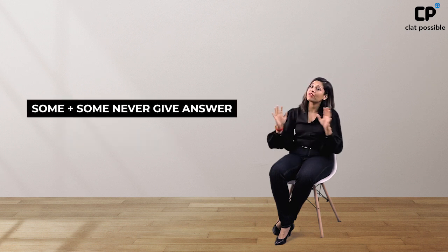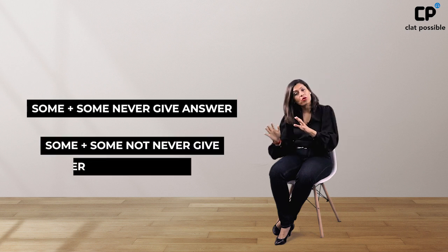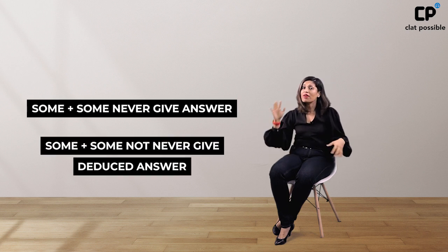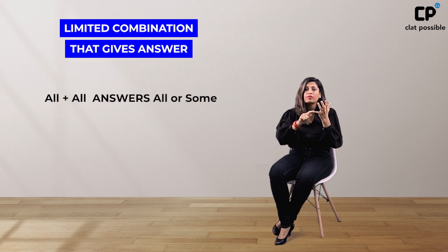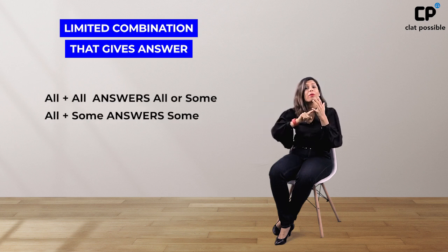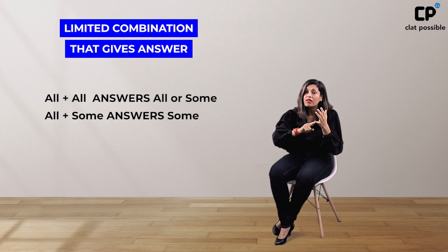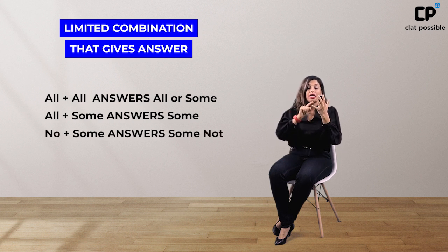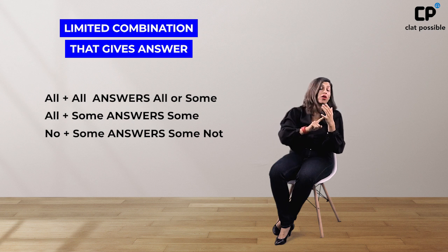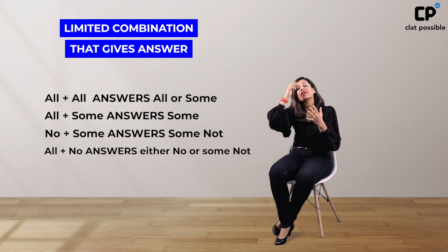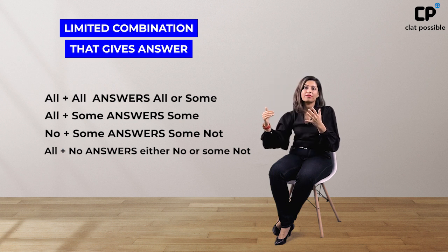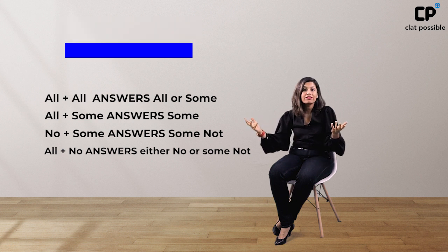Similarly, 'some' plus 'some' can never give you any answer, and 'some' plus 'some not' can never give you any deduced answer. So effectively, there are only a few combinations that give you answers: 'all' plus 'all' can give you an 'all' or 'some' answer; 'all' plus 'some' can only give you a 'some' answer; 'no' plus 'some' will always give you a 'some not' answer; and 'all' plus 'no' can give you either a 'no' or a 'some not' answer. No other combination can yield any answer.